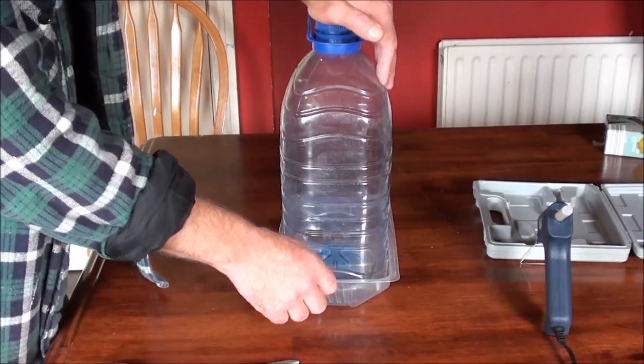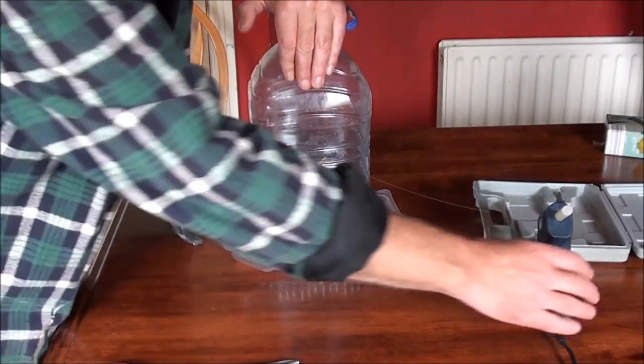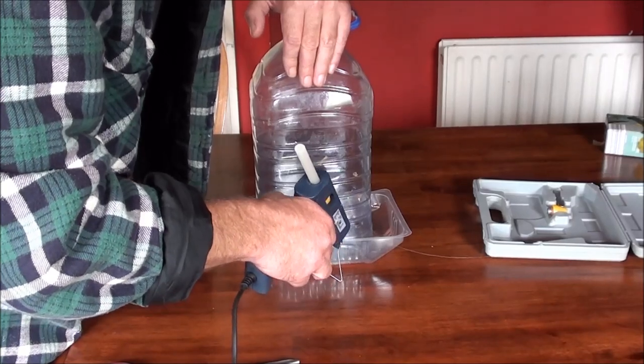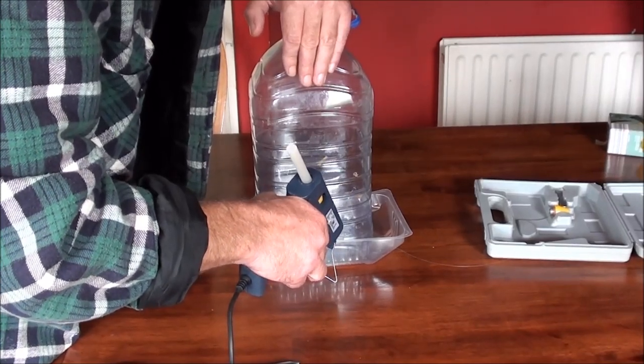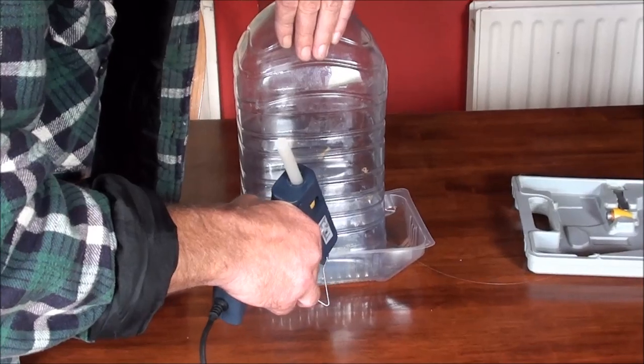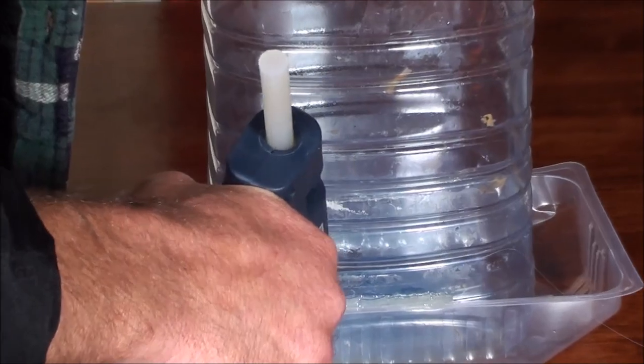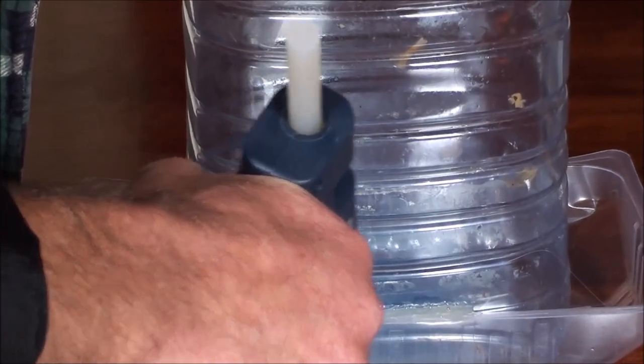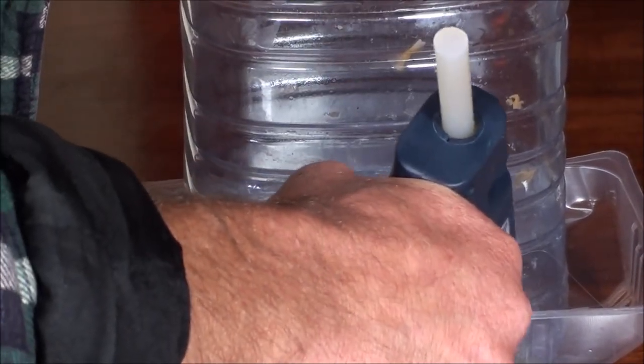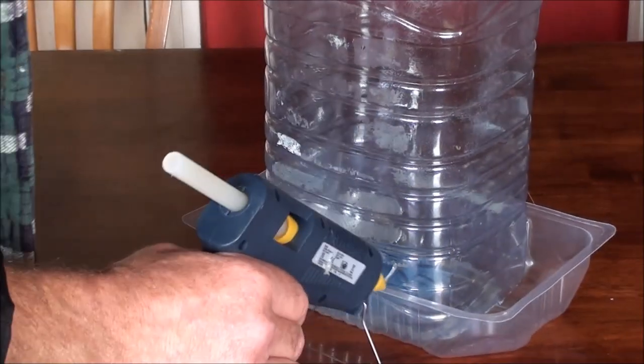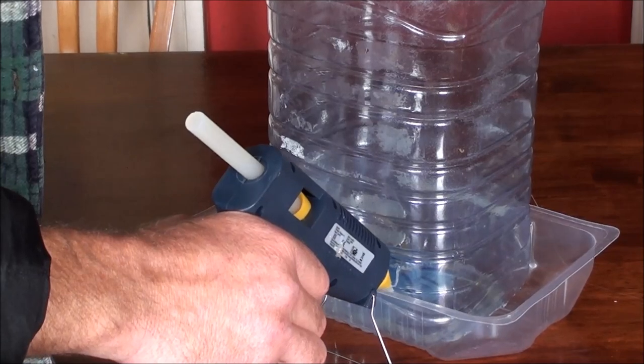And while you're holding that down, get the glue gun again and just seal up these joints here between the bottle and the meat container. That just adds a bit more strength to the joints.